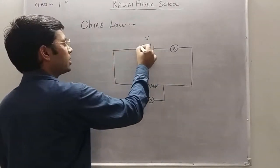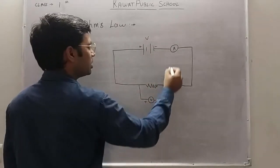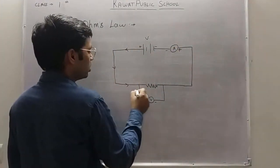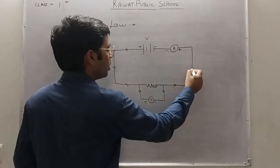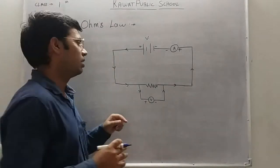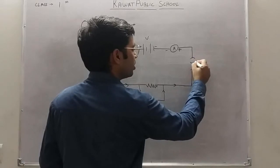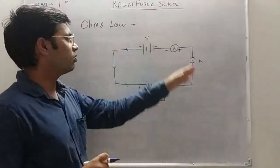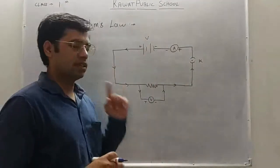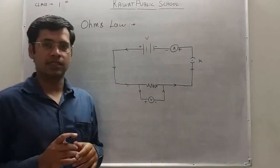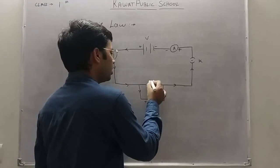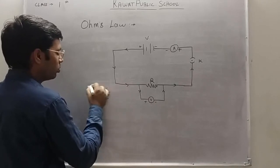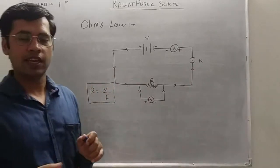The circuit has positive and negative terminals on each component. We can also use a key to turn the circuit on and off. This is the circuit where we can find the relationship between voltage and current. When we increase the voltage, the current also increases, and this resistance R can be measured with the formula R = V/I. We record observations of V and I and then calculate resistance.